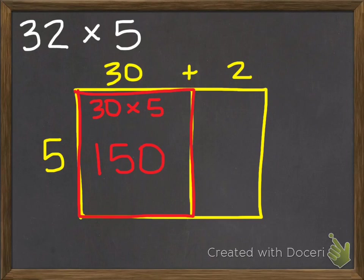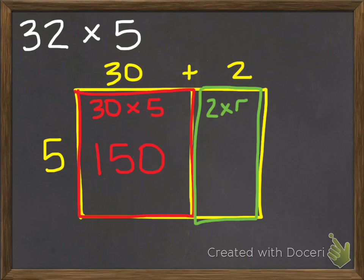Now I move to the second part of my rectangle. And it is 2 by 5. So 2 times 5, which equals 10.